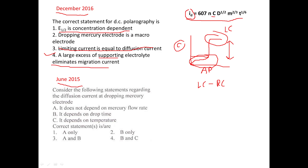This question was in June 2015, and again it depends on the Ilkovic equation. Consider the following statements regarding the diffusion current at a dropping mercury electrode. Statement A: it does not depend on mercury flow rate — this is false, because it does depend on the flow rate. Statement B: it depends on the drop time — T in the equation is the time for each drop to fall, so this is correct.